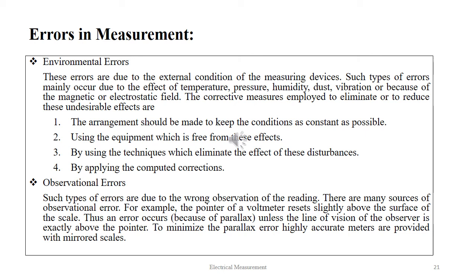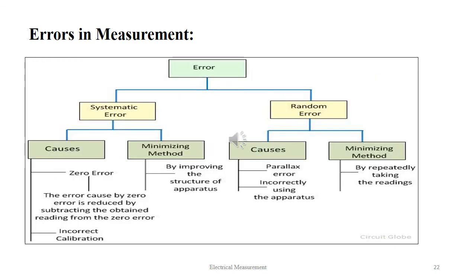Observational errors occur due to wrong observation of readings. For example, the pointer of a voltmeter rests slightly above the surface of the scale, causing parallax error unless the line of vision of the observer is exactly above the pointer. To minimize parallax error, highly accurate meters are provided with mirrored scales. In this picture we see the different causes and minimizing methods for systematic and random errors. For systematic errors, the causes are zero error and incorrect calibration, minimized by improving the structure of the apparatus. For random errors, causes include parallax and incorrect use of the apparatus, minimized by repeatedly taking readings.